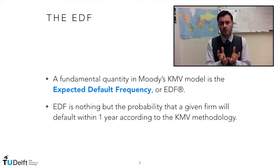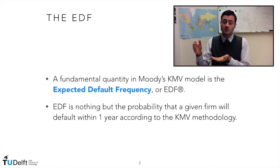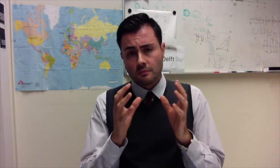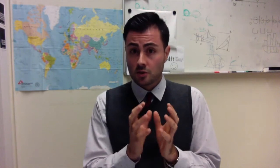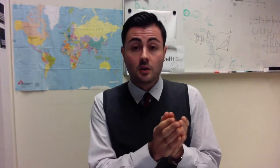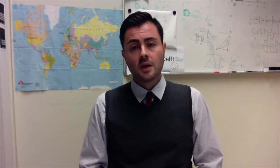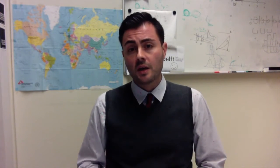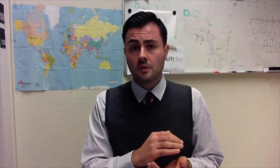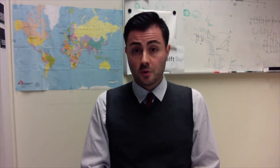The expected default frequency is nothing more than the probability of default of our counterparty over a one-year time horizon. Moody's KMV is a structural model of default that originates from Merton's model, and it tries to overcome many of the weaknesses of Merton's model.